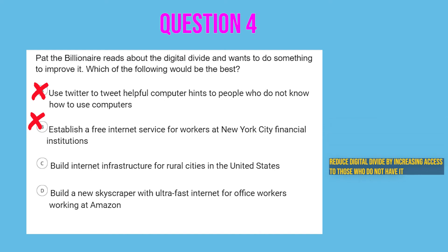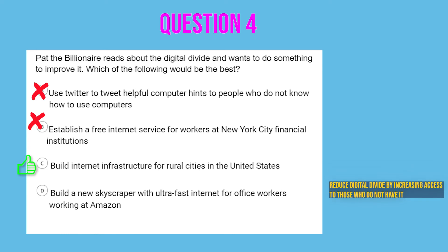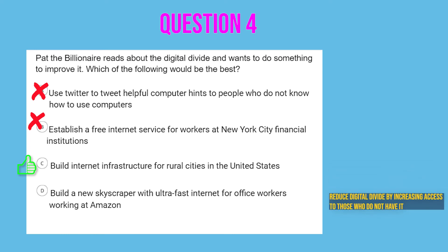Option C: build internet infrastructure for rural cities in the United States. Are we giving computing to those who do not have it? Yes. In the countryside, internet cabling is just not as prevalent, so folks who live there don't have as much internet as those in cities. Option D: build a new skyscraper with ultra-fast internet for office workers at Amazon. Those who work at Amazon already have computing, so that's not going to reduce the digital divide.